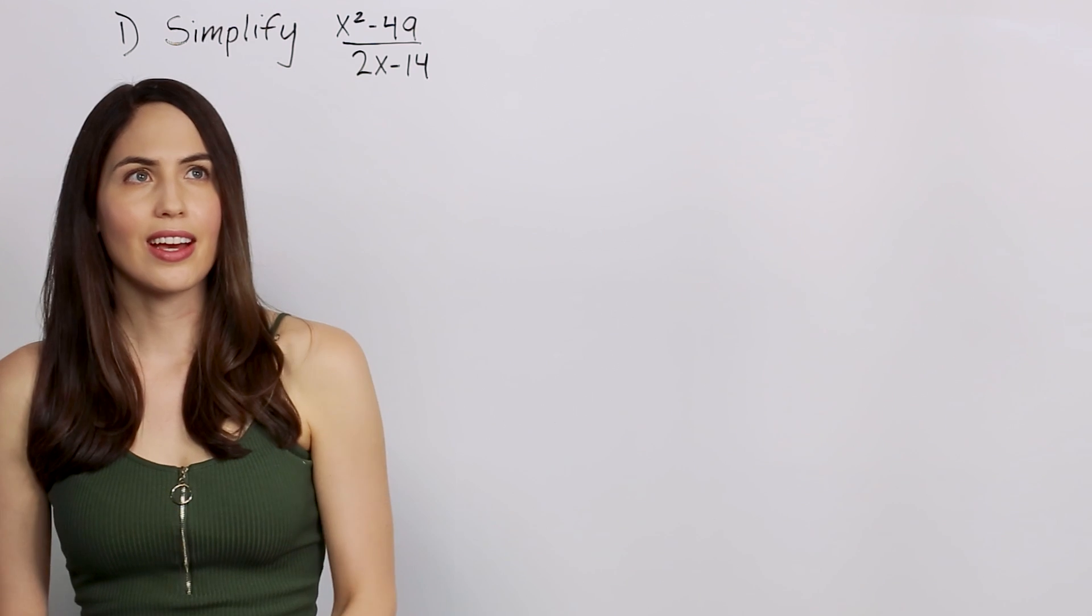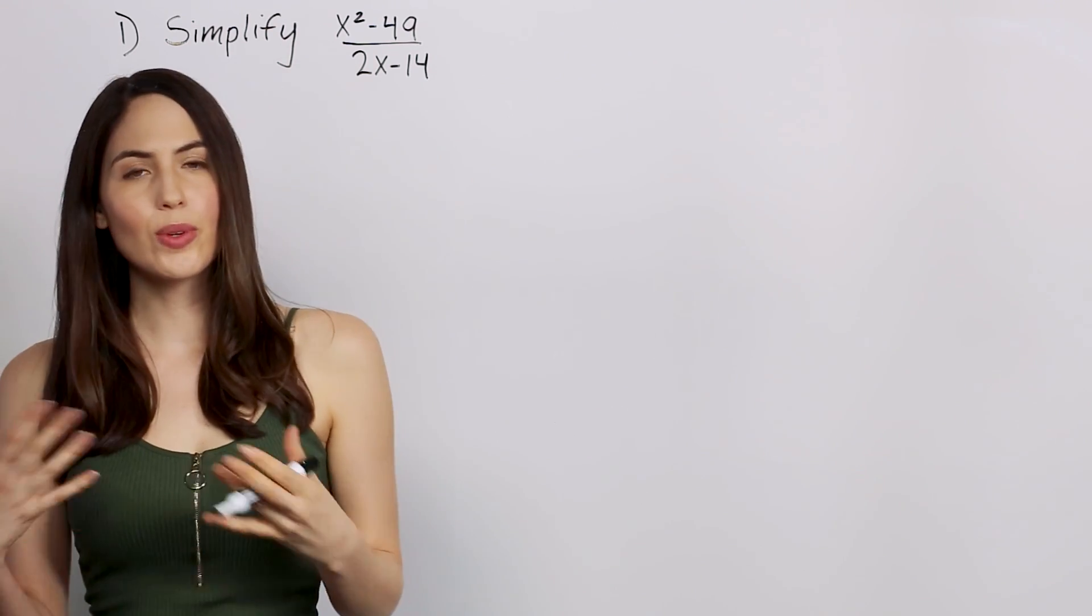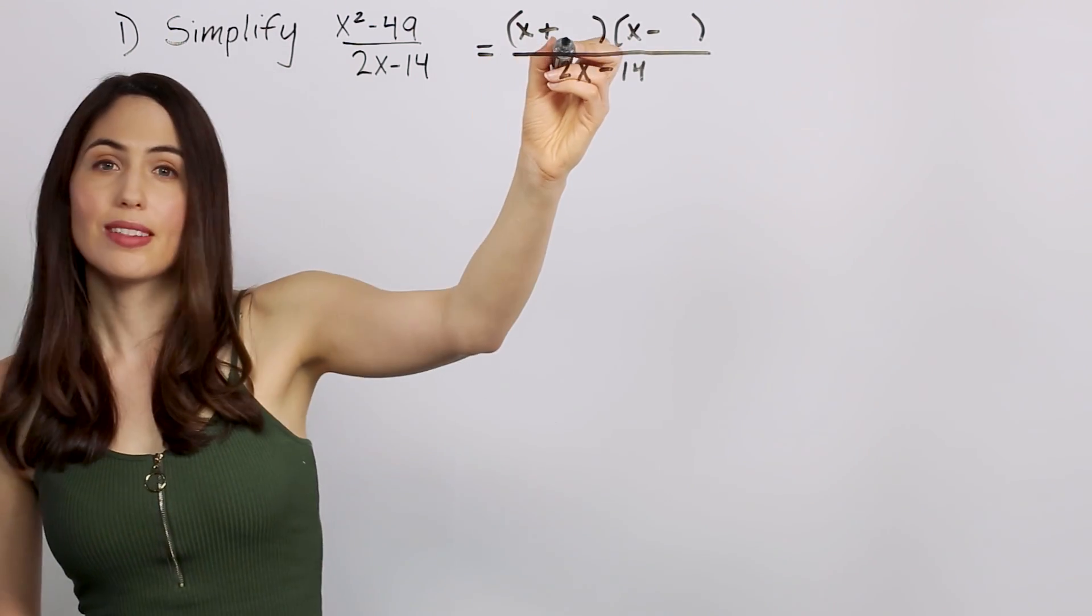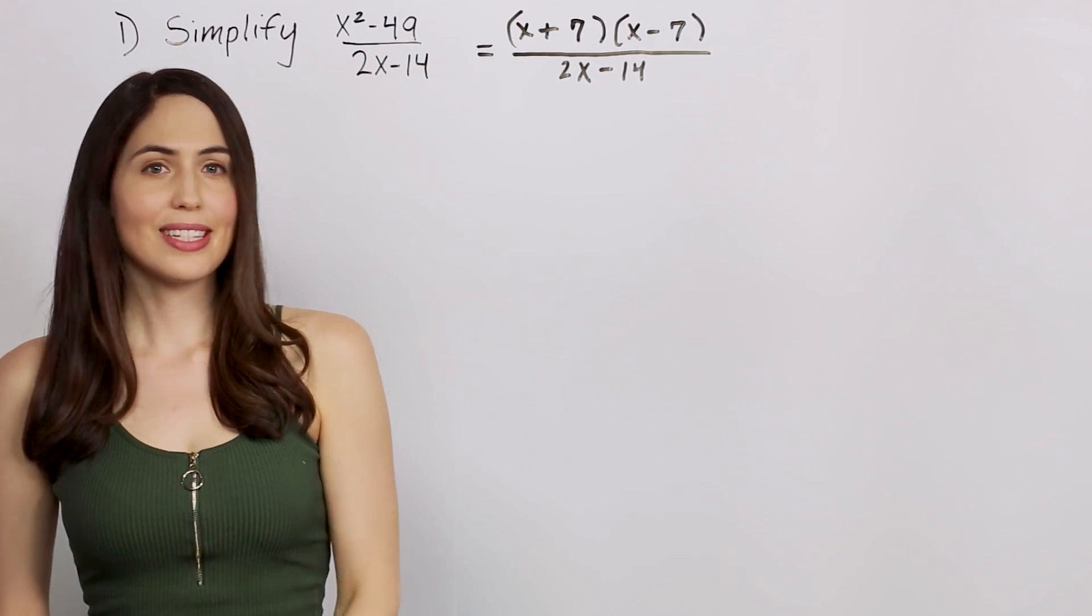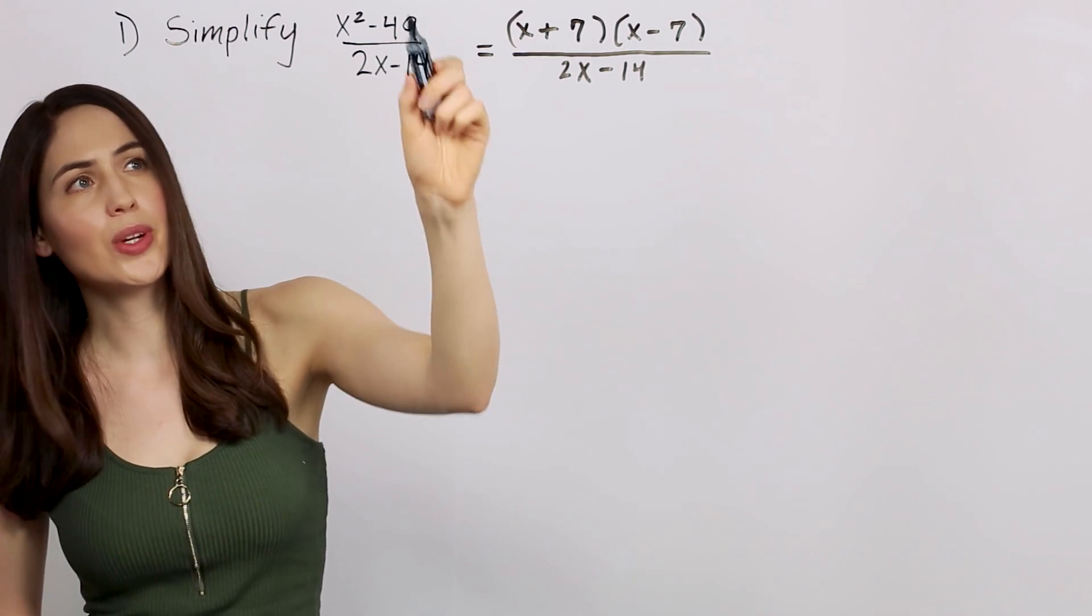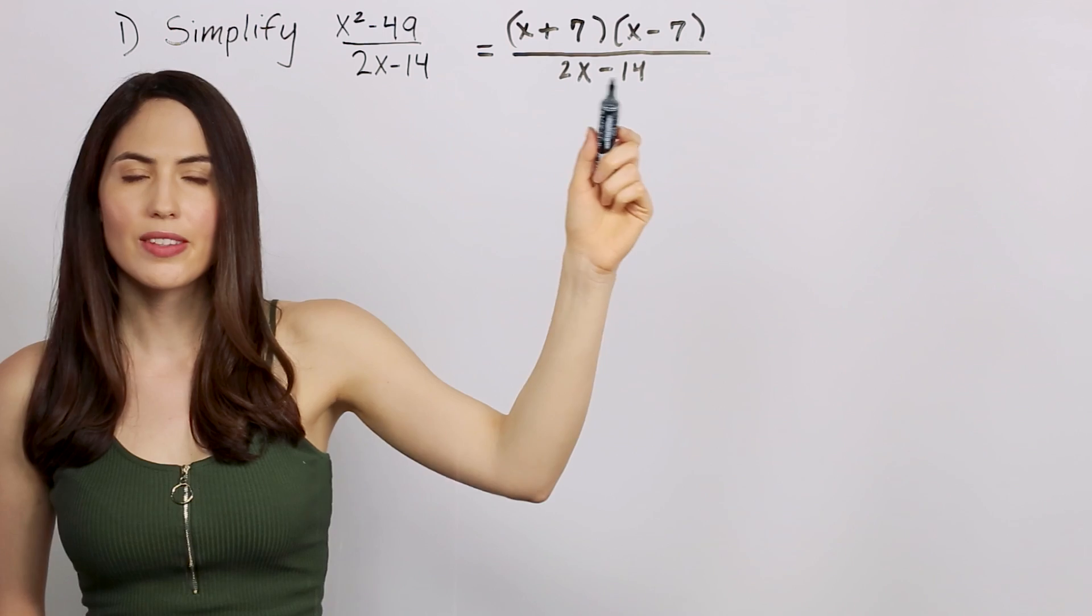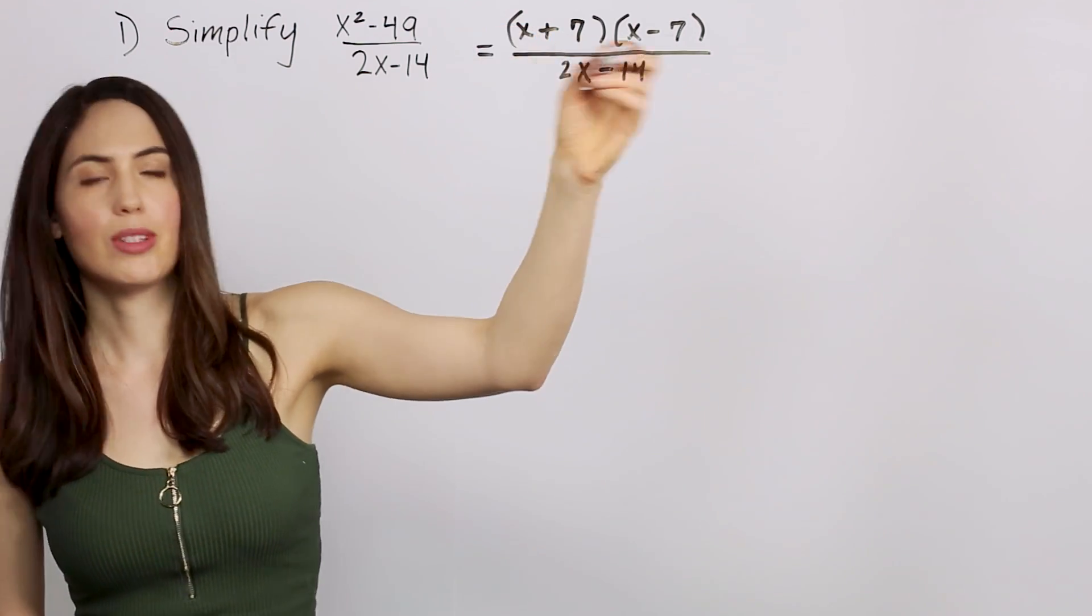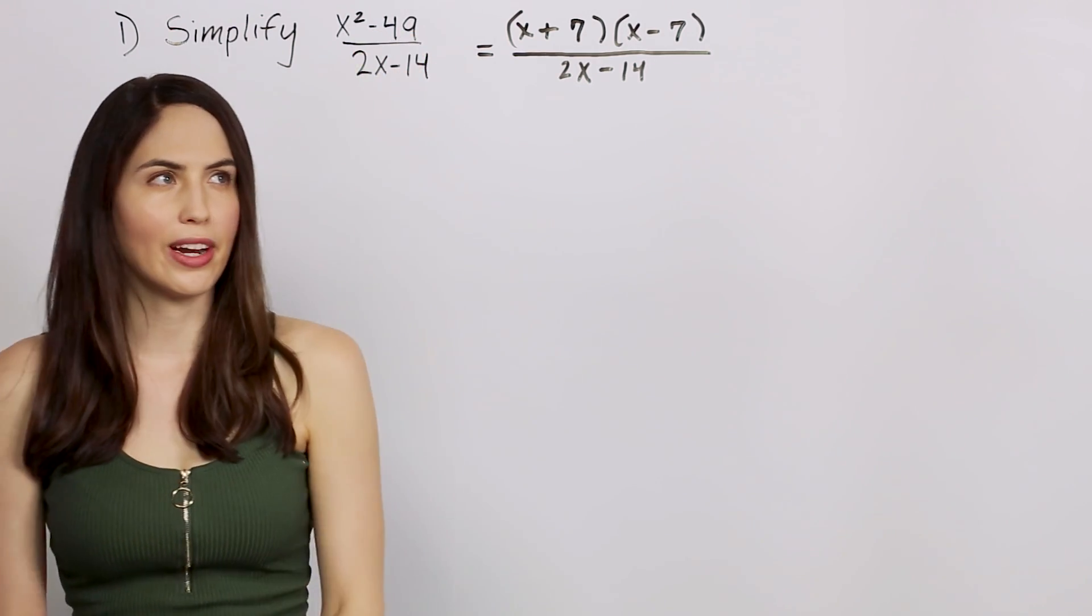So how do we factor that? When you have something that looks like x squared minus a number, and the number is a perfect square, so 4, 9, 16, 25, 36, 49, it can be factored into x plus a number times x minus that number, where the number is 7 since 7 squared is 49. So this factors into x plus 7 times x minus 7. This is the difference of squares formula for factoring.